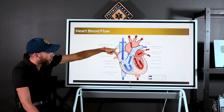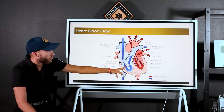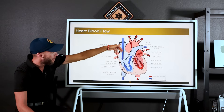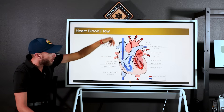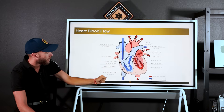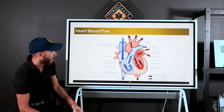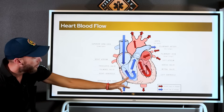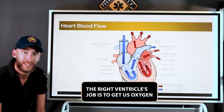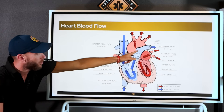The right atrium drops down to the stronger right ventricle. The ventricles are strong and have a job to do. The atria are on top; the ventricles are on the bottom. Blood shoots down between the atrium and ventricle on each side. Right atrium drops down into the right ventricle. Between them is the tricuspid valve. The right ventricle's job is to get us oxygen because we don't have any. So the right ventricle moves blood through the pulmonic valve into the pulmonary artery.